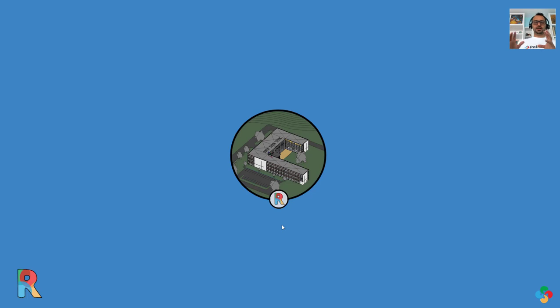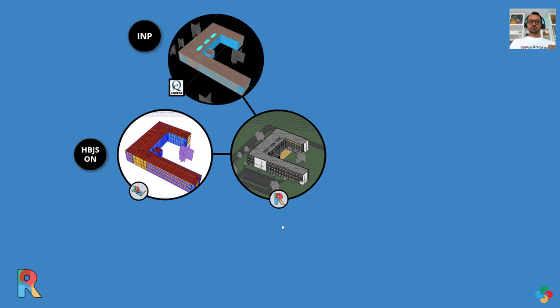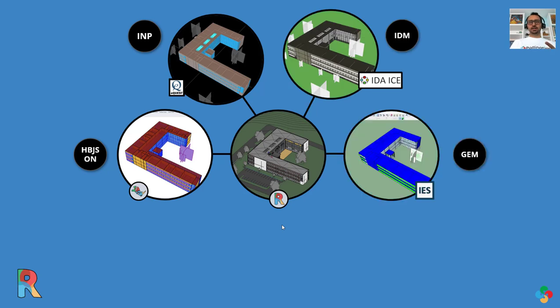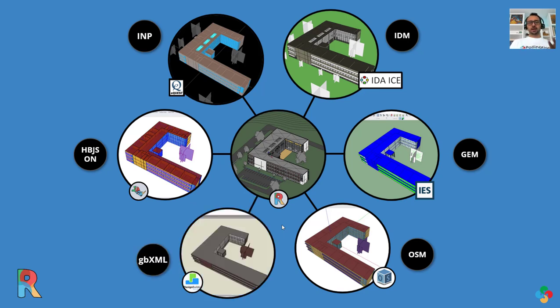Unlike other tools that said, okay, we just write our own exporter to our own software, which for us would have been the pollination Rhino plugin. We decided that we have this clean model. We have this valid model. Let's export it to all the popular energy modeling software. So you're going to export to eQuest using INP, IDA ICE using IDM, ISVE using GEM, OpenStudio using OSM, and also IDF for EnergyPlus. And finally, DesignBuilder, we are working with their team to use their new DBS XML file format, but for now it will be GBXML. And we also have trace that we are working with trace team to have a modified version of GBXML that you can export this model to trace.